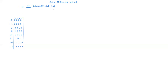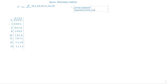Let us consider a sum of products equation which consists of the following minterms: 0, 1, 2, 8, 10, 11, 14, and 15. There are actually two steps involved. The first step is finding the prime implicants. The next step is finding the essential prime implicants. From this equation, what are all the essential prime implicants — that is what we are going to see.